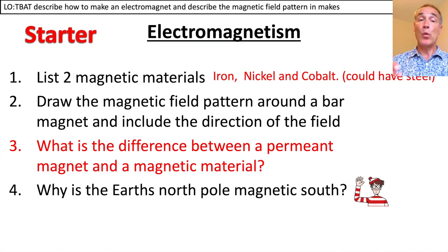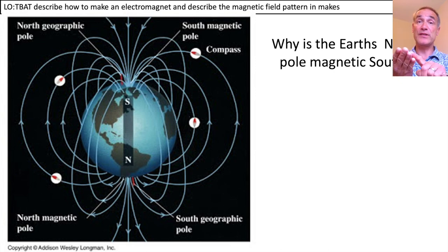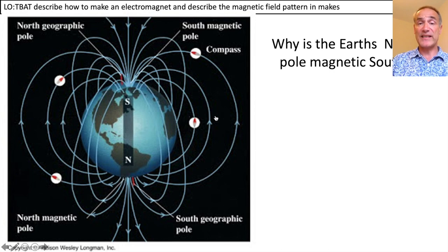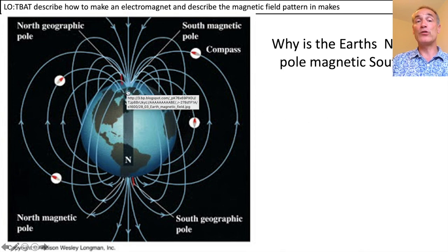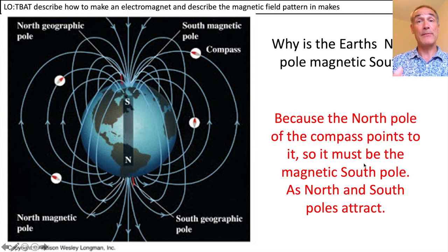Why is the Earth's north pole magnetically south? It was called the north pole because the north of the compass pointed to it. But the reason the compass points that way is because the Earth has its own magnetic field. The red lines on the compass point towards the top, which must be the magnetic south — so the answer is that the north pole of a compass points to it, meaning it must be the magnetic south pole, as north and south poles attract.